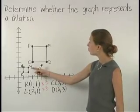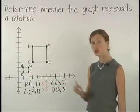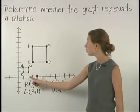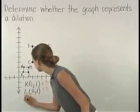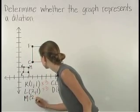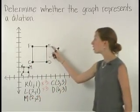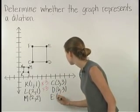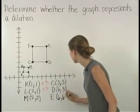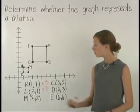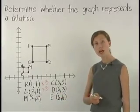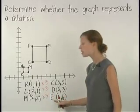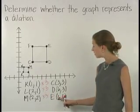Next, notice that point M corresponds to point E. Point M has the coordinates, and point E has the coordinates. Again, the coordinates of point M have been multiplied by the scale factor 3 to get the coordinates of point E.